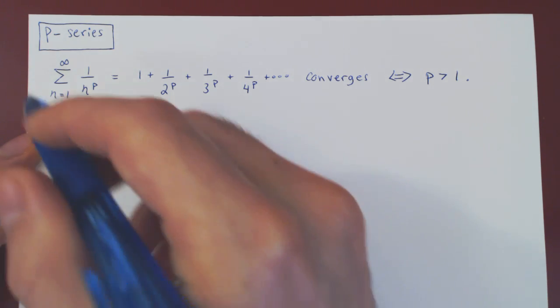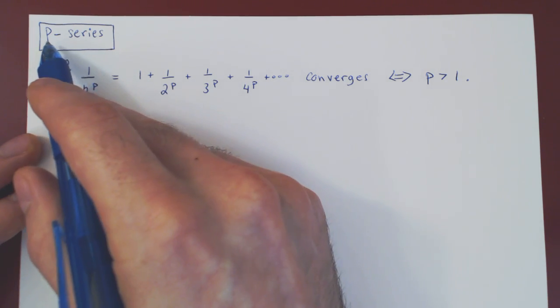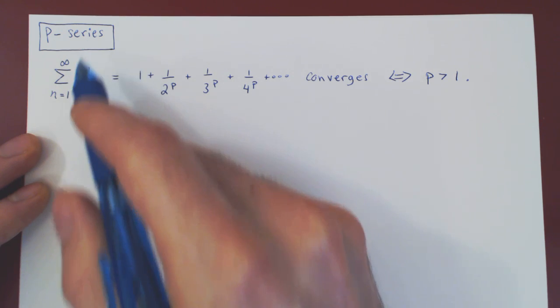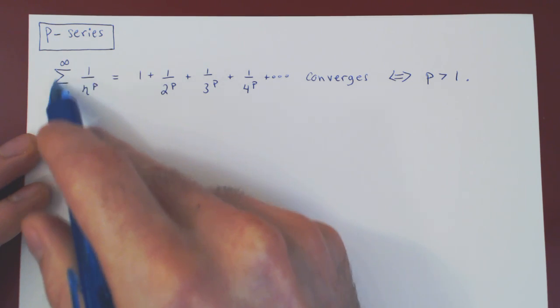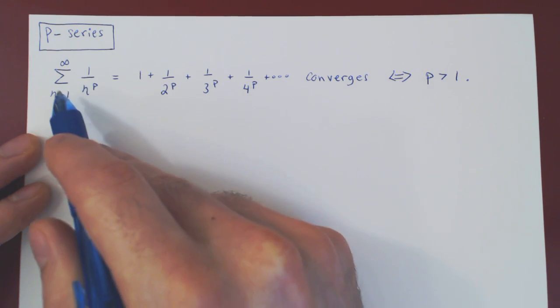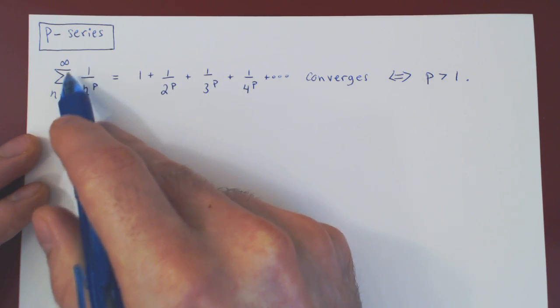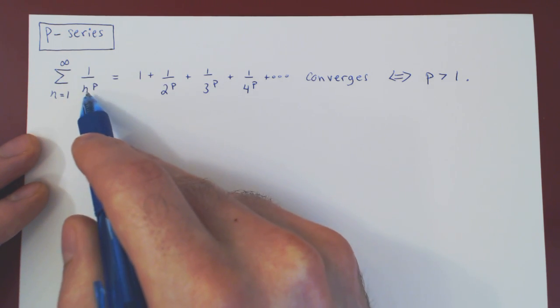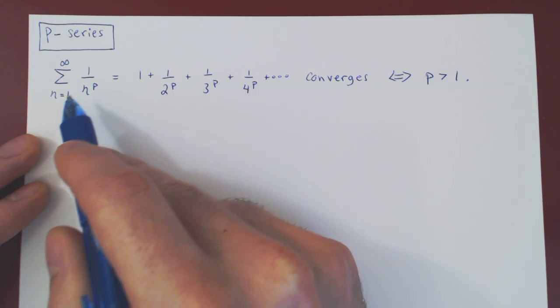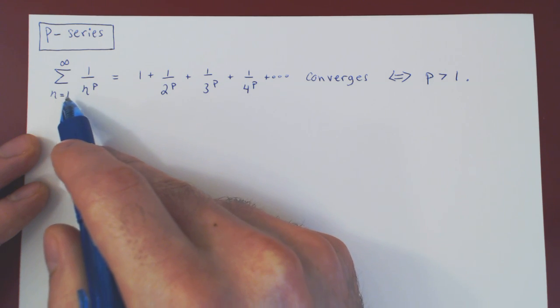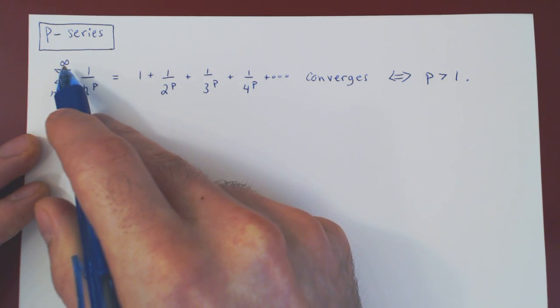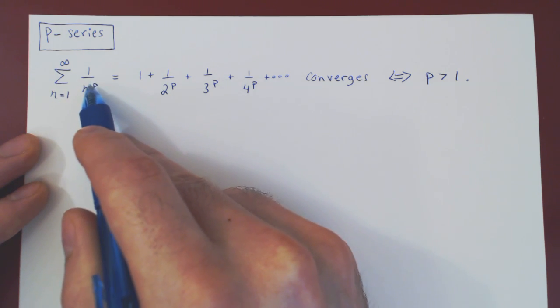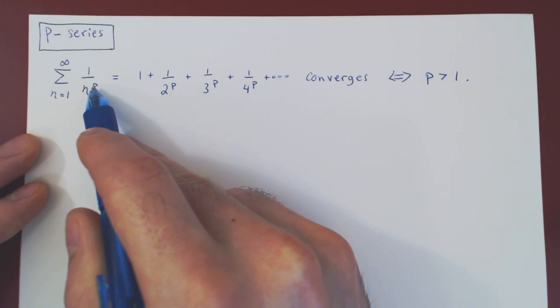In this video, we will look at so-called p-series. Here's what a p-series is: it is the series of 1 over n to the p, as n goes from 1 to infinity, where p is a fixed real number.